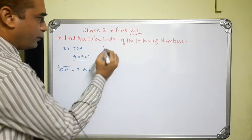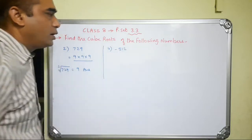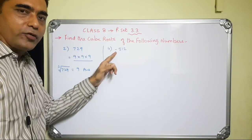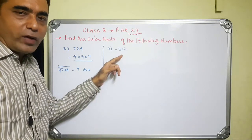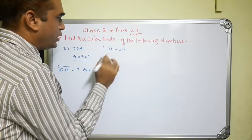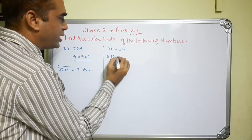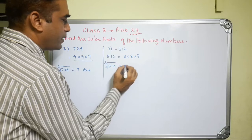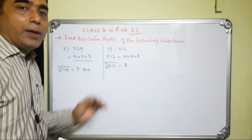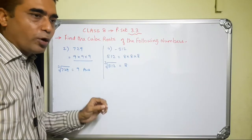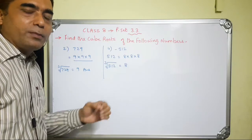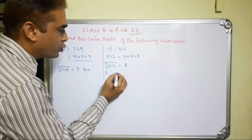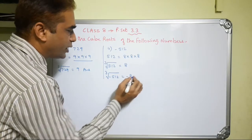The fourth sub-question is negative 512. First we will find the cube root of 512, then of negative 512. We know that the cube root of 512 is 8, since 512 = 8×8×8. The cube of a positive number is positive and the cube of a negative number is negative. So the cube root of positive 512 is positive 8, and the cube root of negative 512 is negative 8.